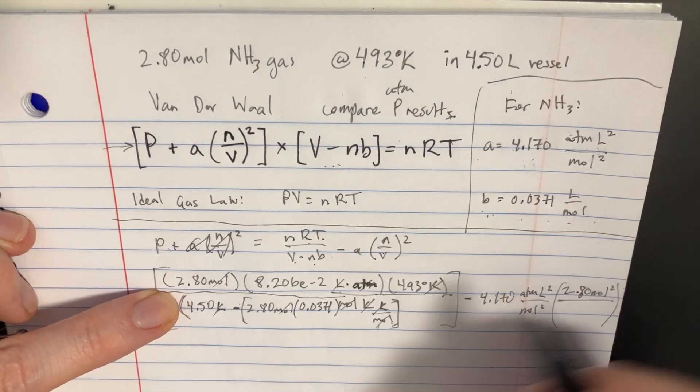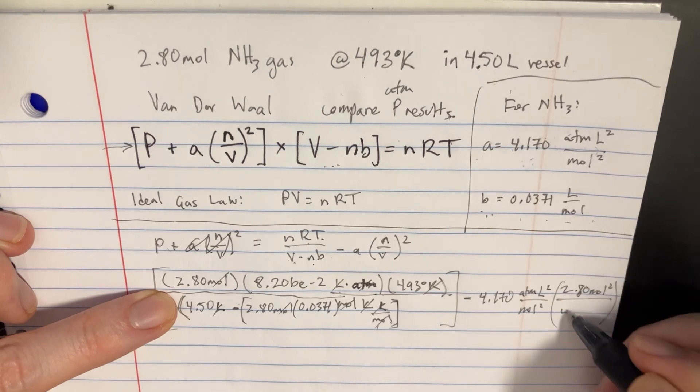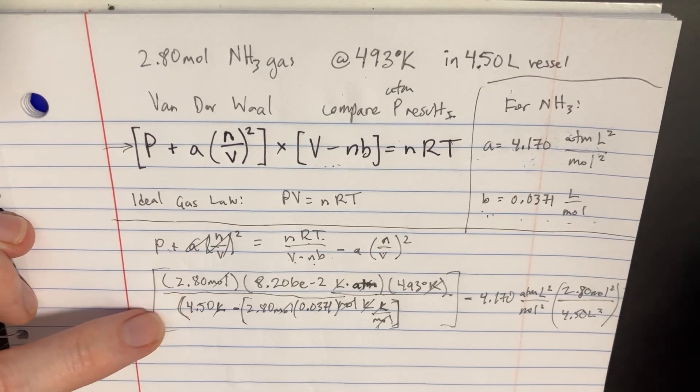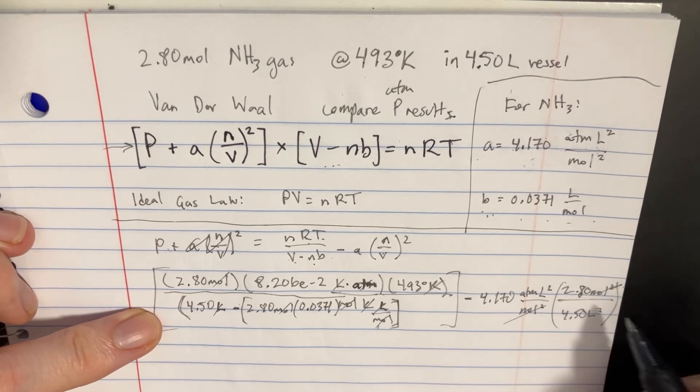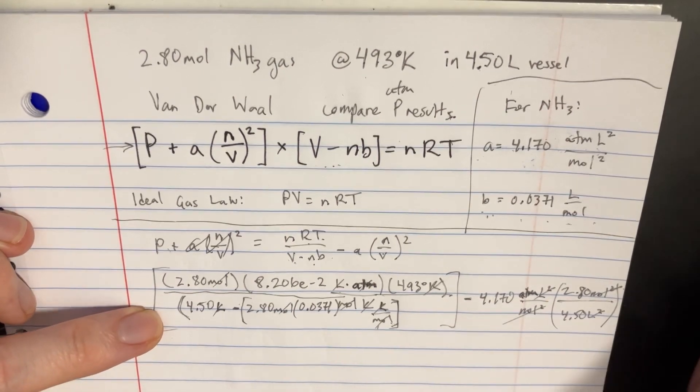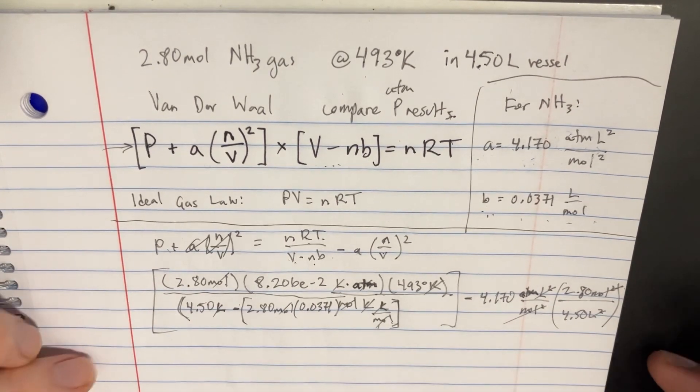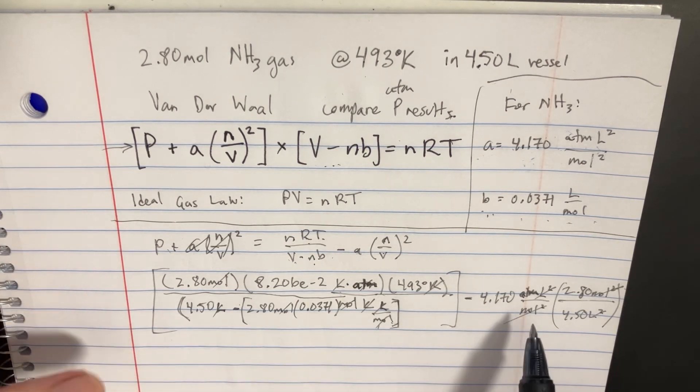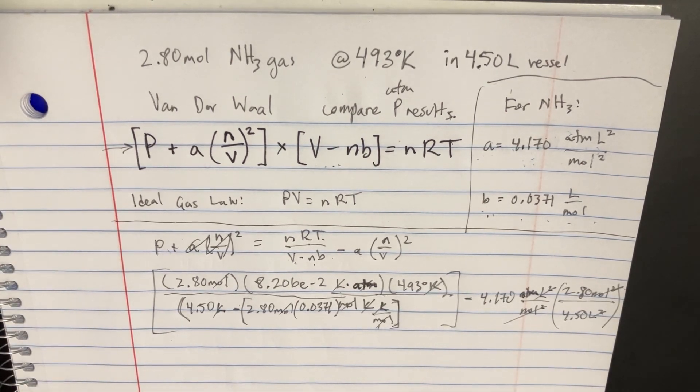And then there's going to be the volume squared, which is 4.50 liters squared. So we can see how the mole squared are going to cancel, the liter squared are going to cancel. And again, we're just left with ATM right here. So that's going to work out. So we can subtract this from that and get an answer.